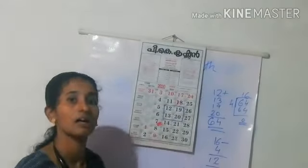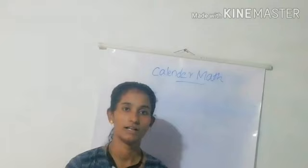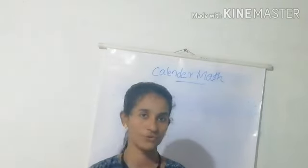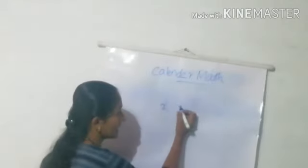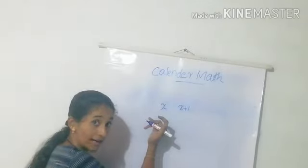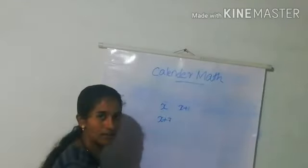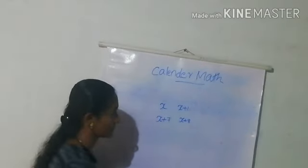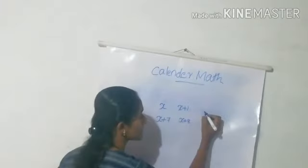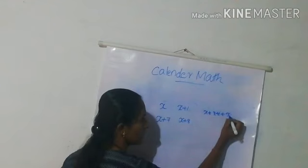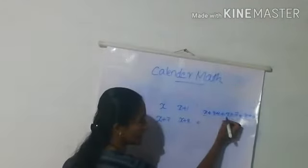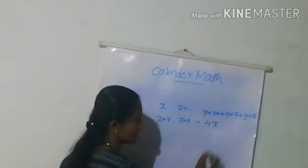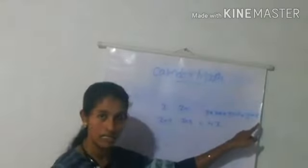Let me find out this relation using algebra. If the first number is x, then the next number should be x plus 1, the number below should be x plus 7, and the last should be x plus 8. If we add these four numbers: x plus (x+1) plus (x+7) plus (x+8), there are 4 x parts so we get 4x.